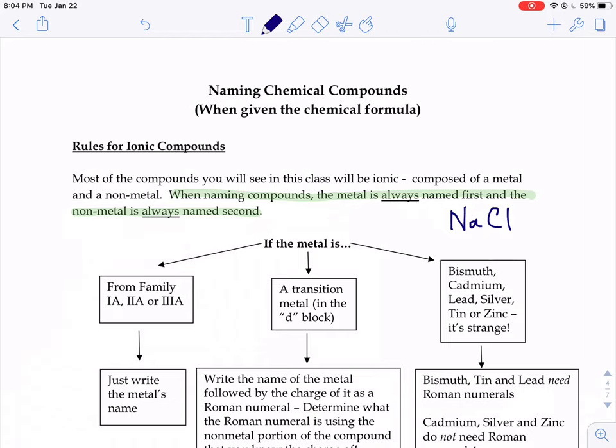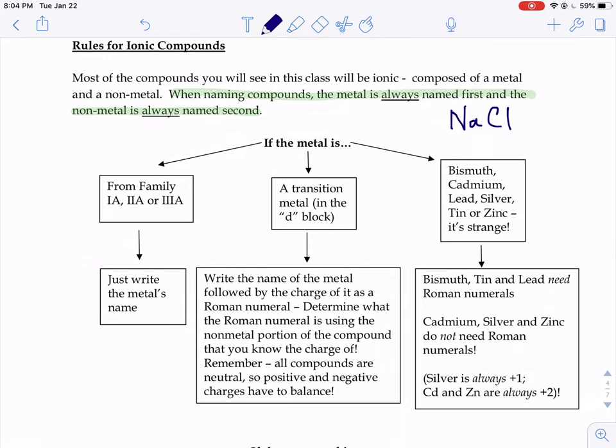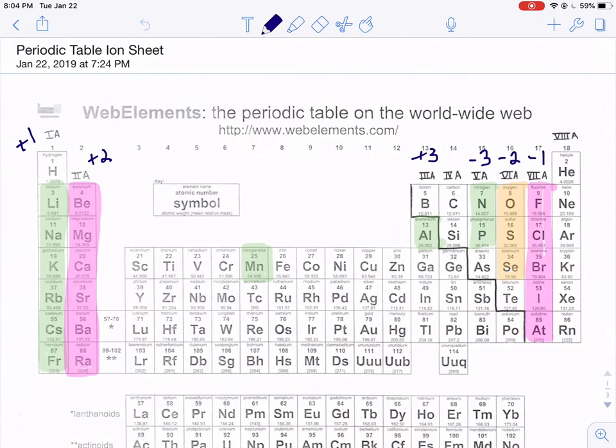When you're coming up with your name, you look at the chemical symbols and first determine if it is ionic or not. If you see any metals in there, you say, where does that metal come from? If it's from family 1A, 2A, or 3A, you just write the metal's name. So for example, if you saw potassium, K, you just write the word potassium. If you saw the symbol Sr, you'd write the word strontium.